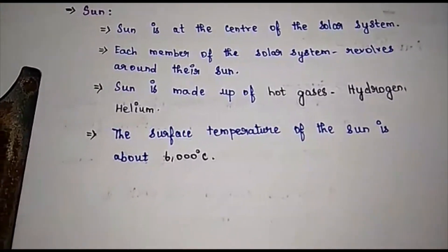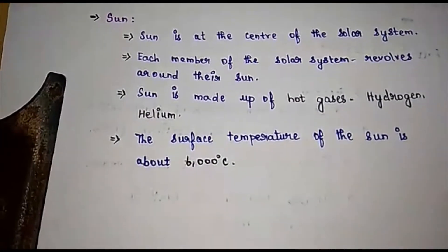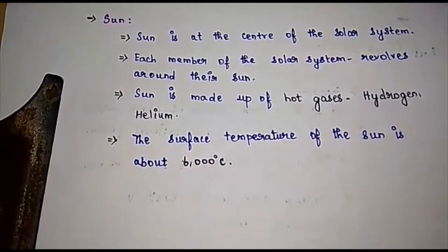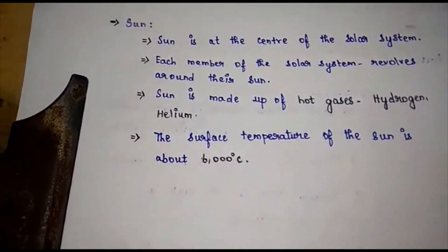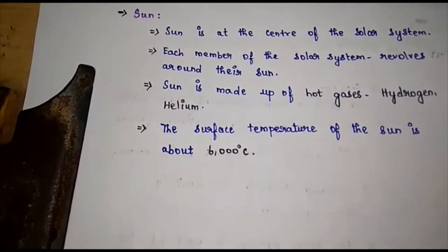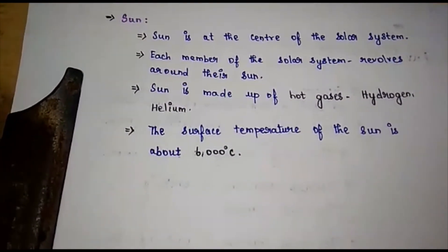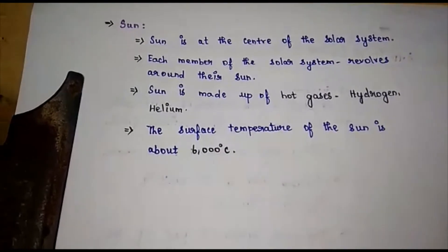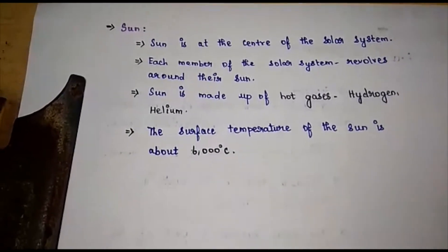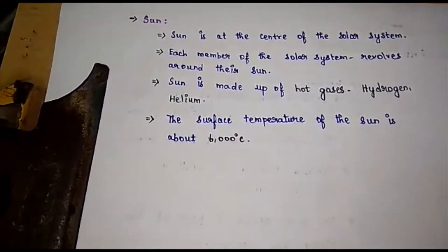The sun is so huge that it accounts for 99.8 percent of the entire mass of the solar system. The sun is made up of extremely hot gases like hydrogen and helium.